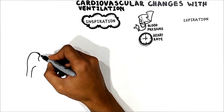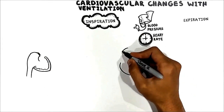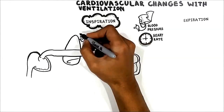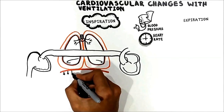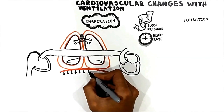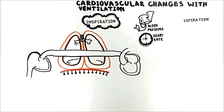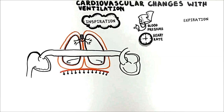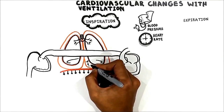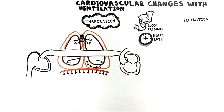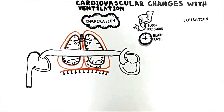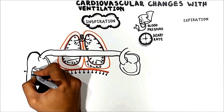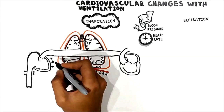I will divide the heart into the right and left sides. Here is the lung, pleural, and diaphragm. When you start breathing, first of all the diaphragm contracts, pulling the lung downwards. This decreases the intrapleural pressure — more negative, from negative 5 to negative 8 cm water. The negative intrapleural pressure causes the lungs to expand. In addition to the lungs, the great veins and right heart also will be expanded.